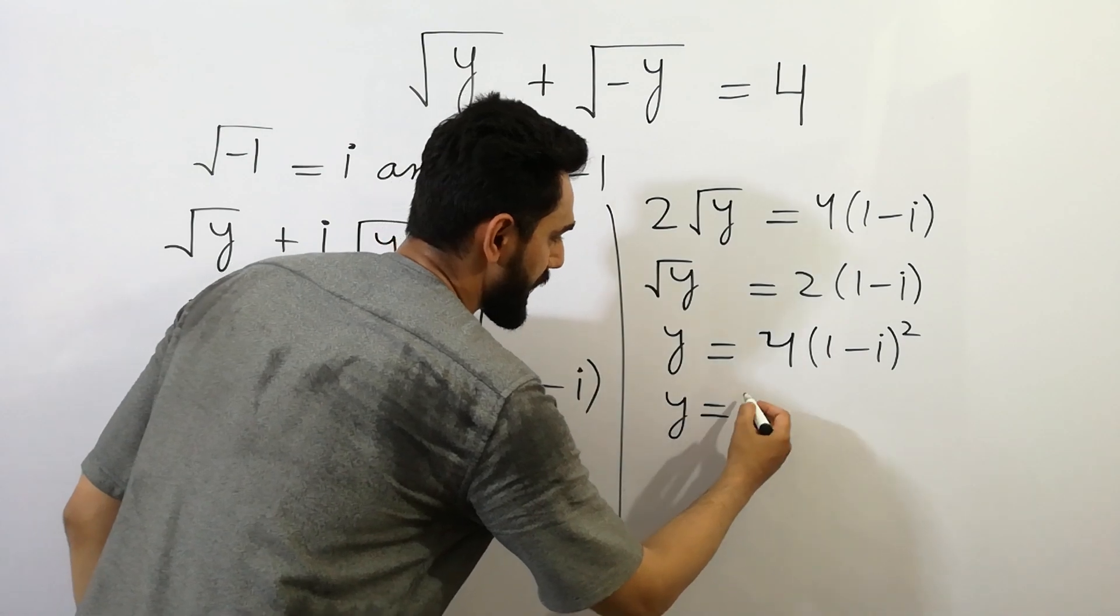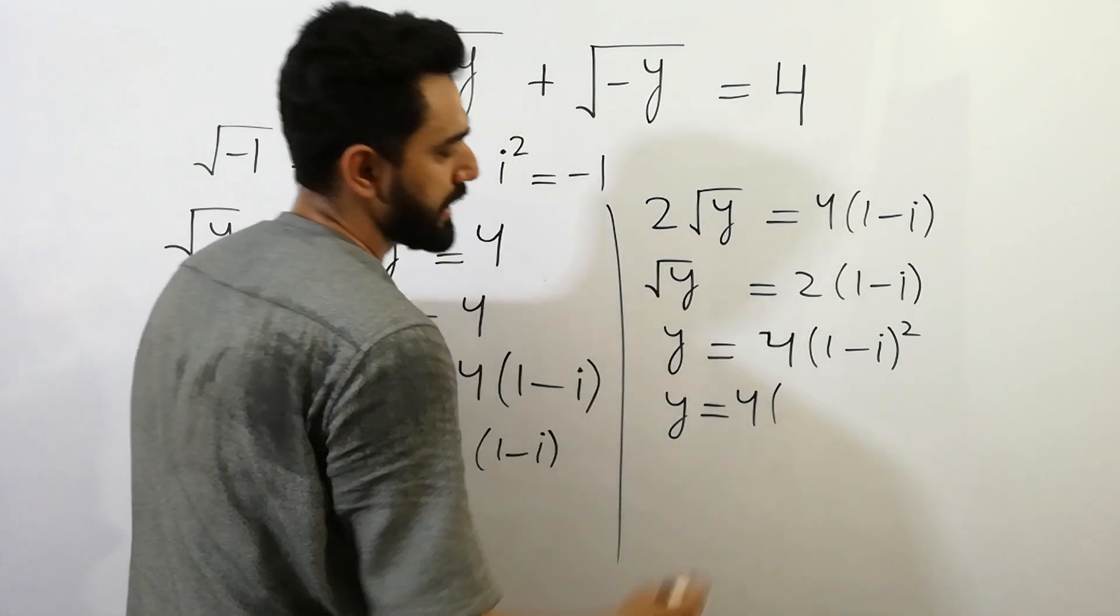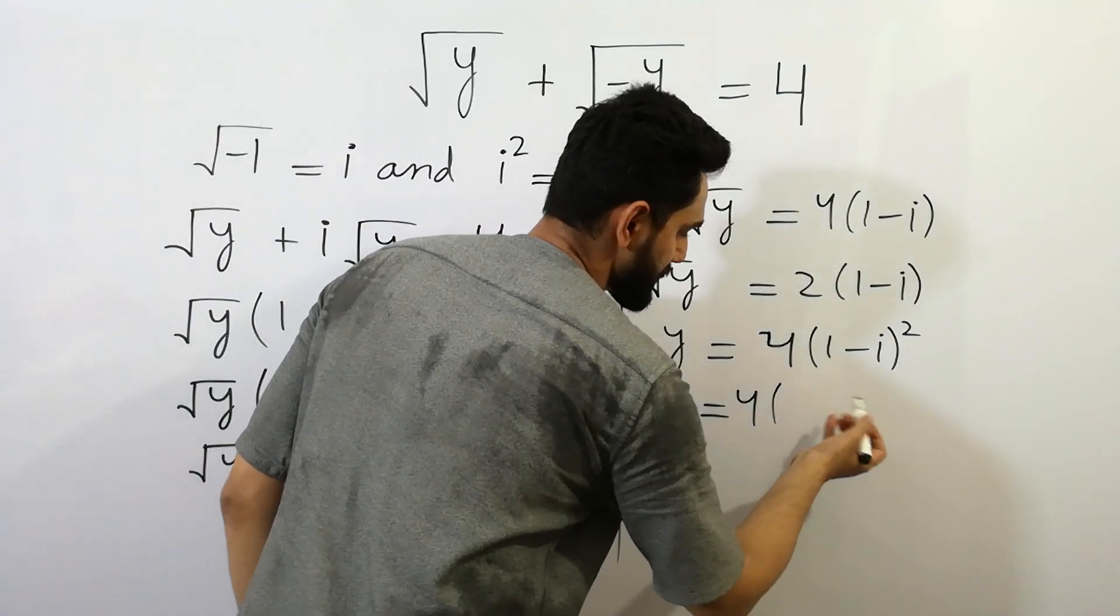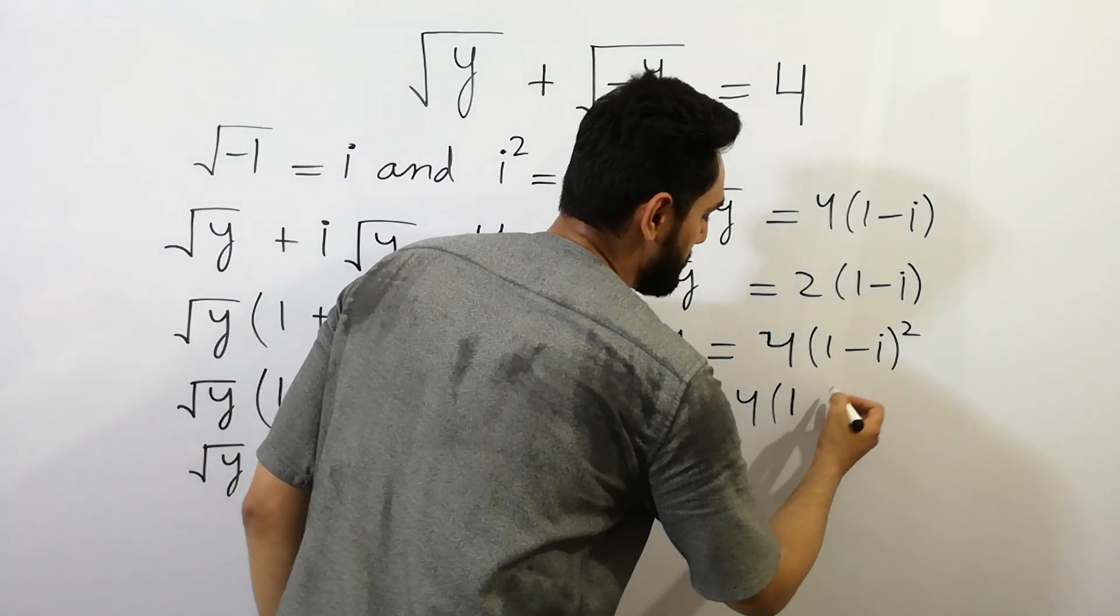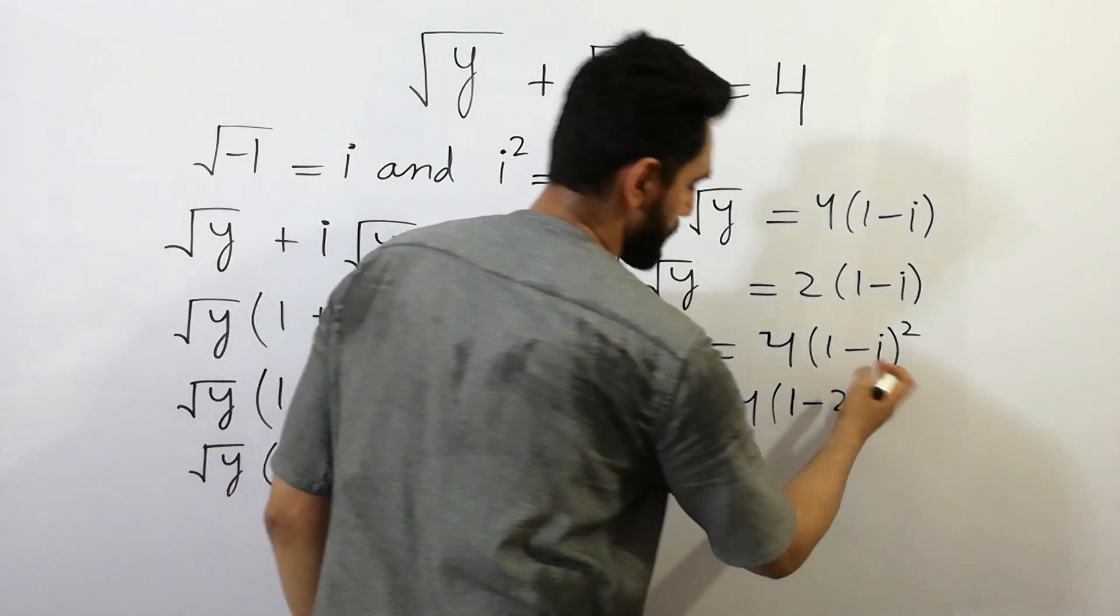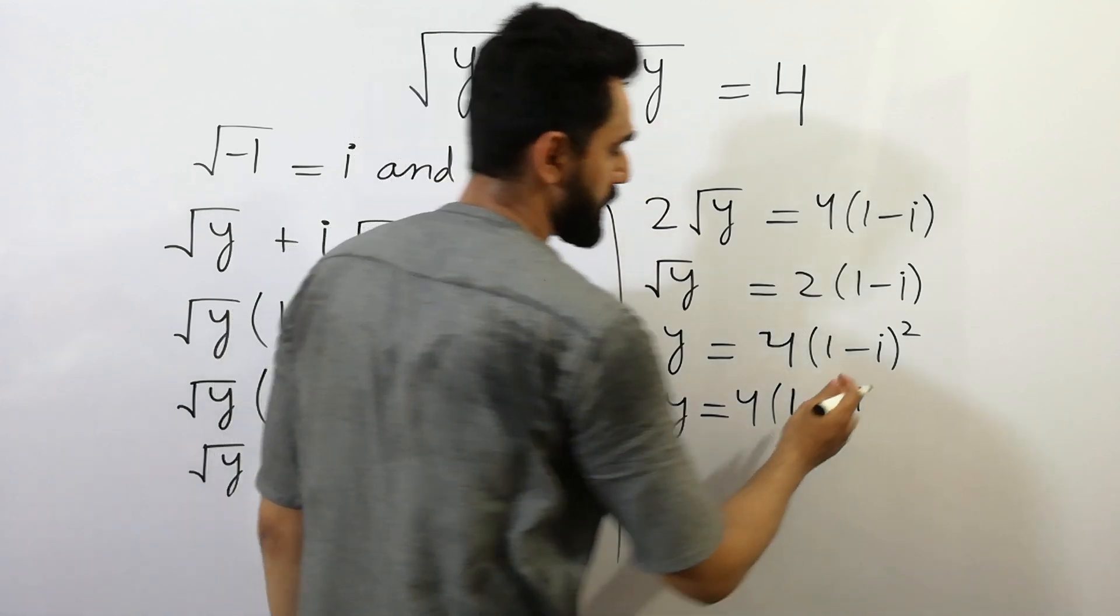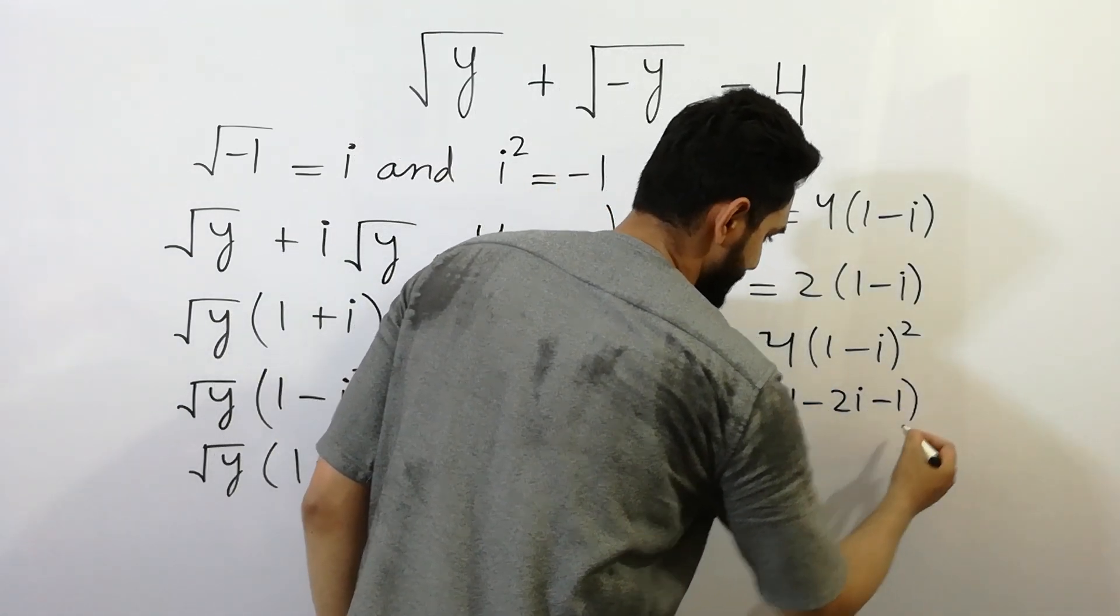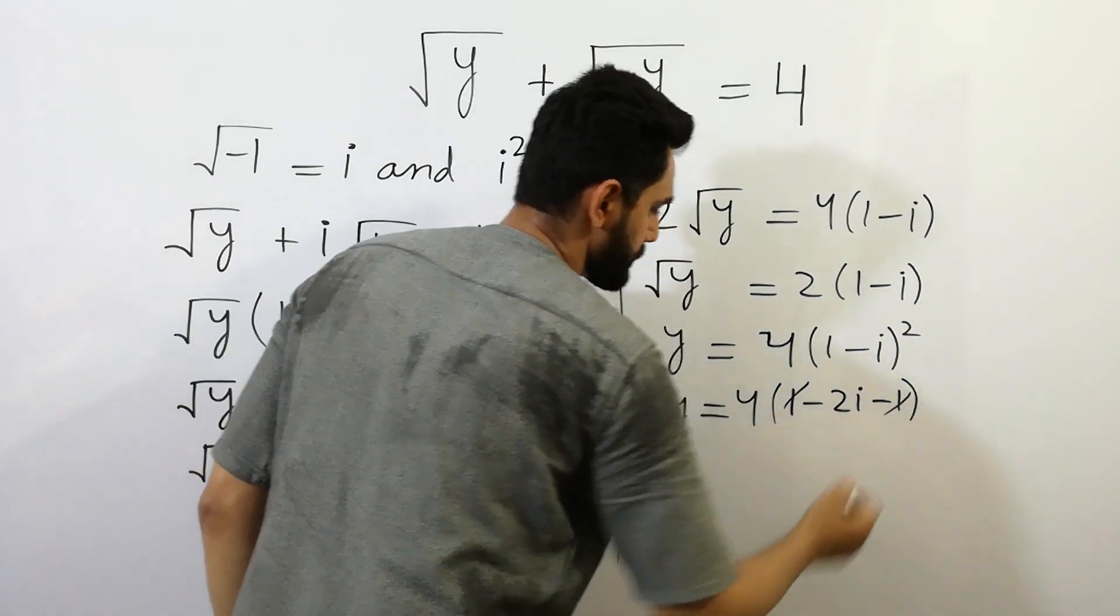Here y is equal to 4, and a minus b whole squared is equal to 1 squared, we get 1, minus 2ab, minus 2i, and i squared can be written as minus 1. Bracket 1 and 1 will be cancelled.